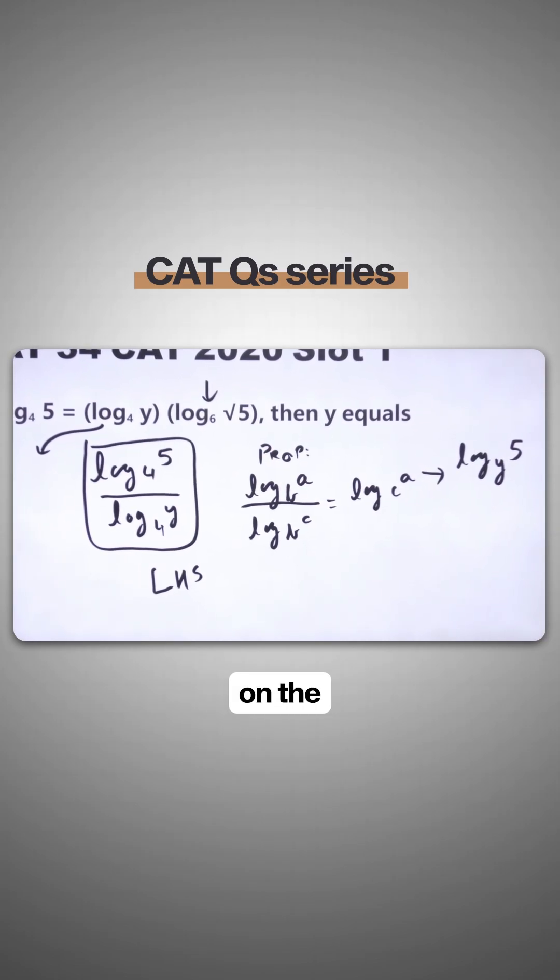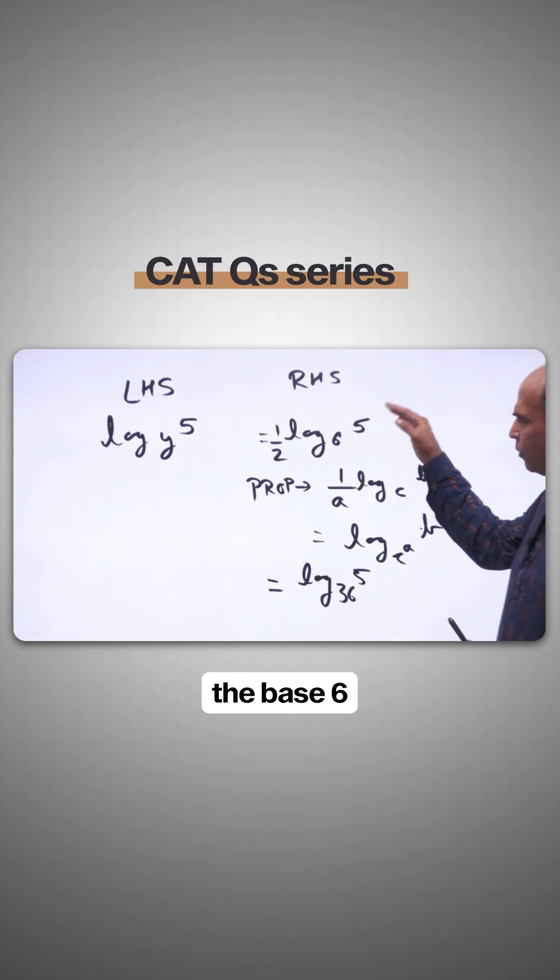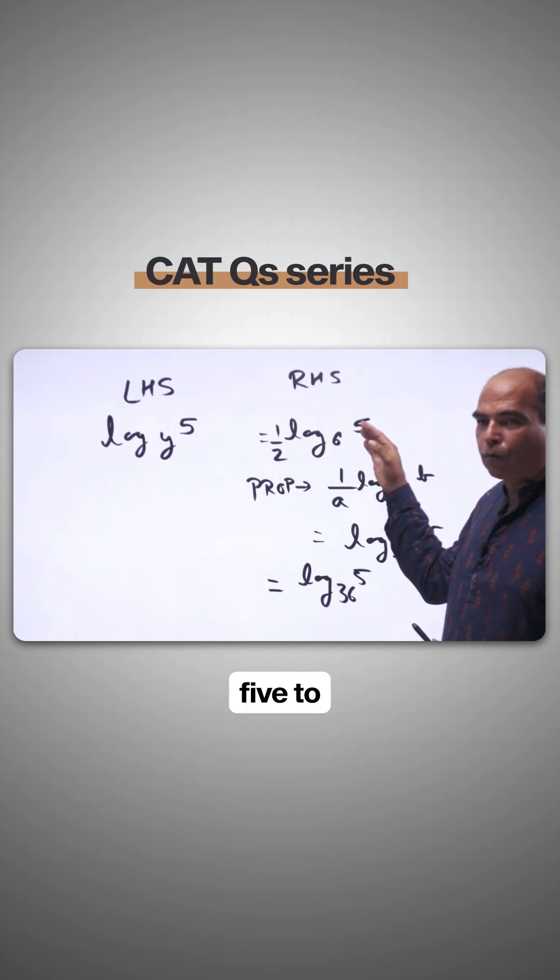On the right hand side, log root 5 base 6 can be written as half log 5 base 6.